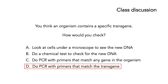Let's look at the other answers and see why they're wrong. A — you can't see DNA under a microscope, at least not the sort of changes we're talking about. B — there's no chemical test, because the new DNA is chemically exactly the same as the existing DNA. C — PCR with primers that match any gene in the organism won't work, because organisms that contain a transgene will have their own natural genes as well as those that are not transgenic. So in order to figure this out, you have to do PCR with primers that specifically match the transgene.